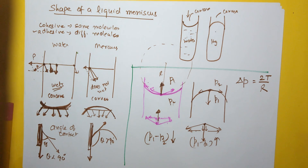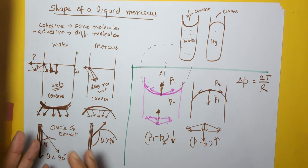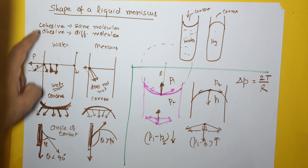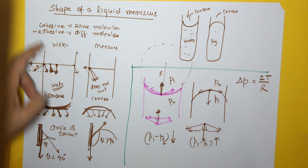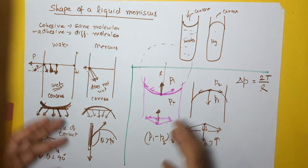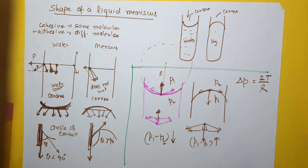That is all about the meniscus of liquids in glass tubes and their association with cohesive forces, adhesive forces, surface tension, and angle of contact.